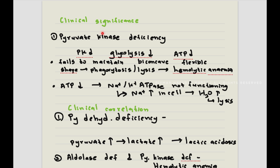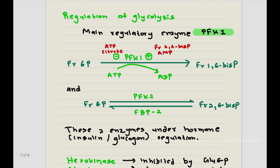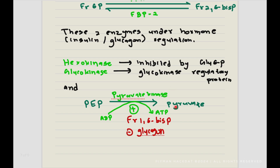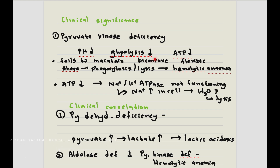Clinical significance of glycolysis — pyruvate kinase deficiency: when pyruvate kinase is deficient, glycolysis goes down and ATP production goes down. Then the biconcave shape of the RBC is not maintained, the RBC becomes abnormal in shape, phagocytosis and lysis occur, and hemolytic anemia results. Also, when ATP goes down, the sodium-potassium ATPase doesn't function properly — sodium inside the cell goes up, water inside the cell goes up, and cell lysis occurs.